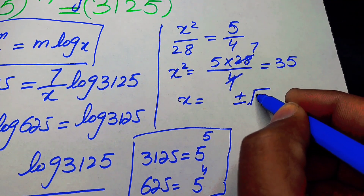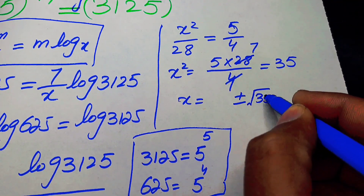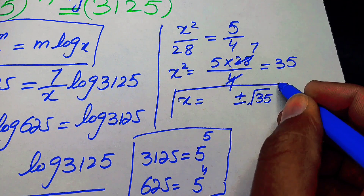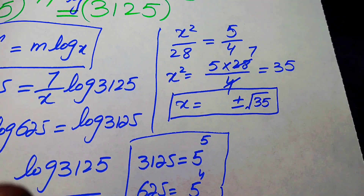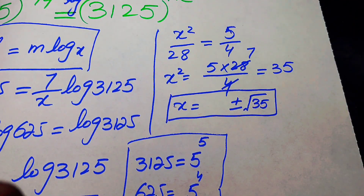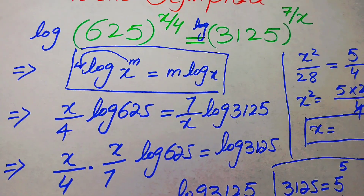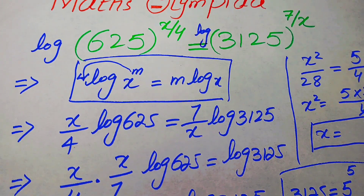Taking the square root on both sides, x equals plus or minus the square root of 35. That is the final answer. Thank you so much for watching — please subscribe to my channel.